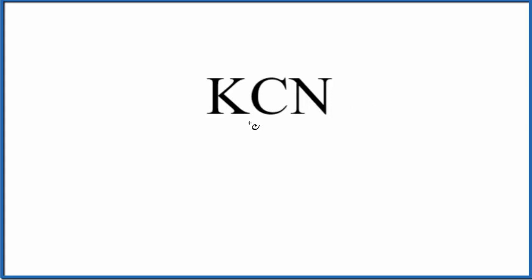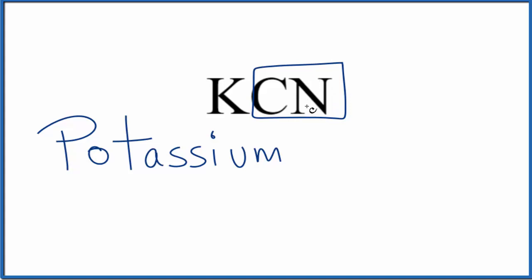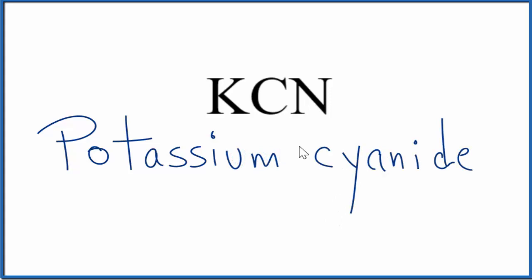First off, K — that's potassium on the periodic table, so we just write potassium. For the CN, you're not going to find that on the periodic table. You need to either memorize that CN is the cyanide ion, or if you're allowed, you can look it up. So we have our potassium, and then we write the name of the polyatomic ion — that's the cyanide ion. And that's the name for KCN: potassium cyanide.